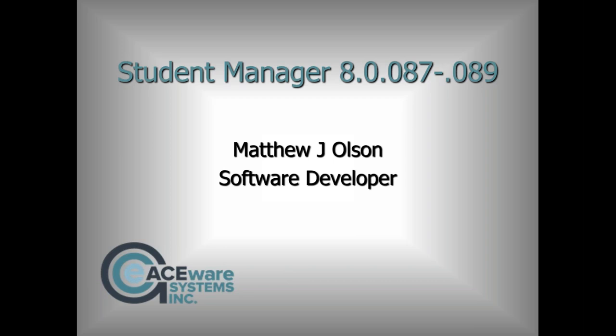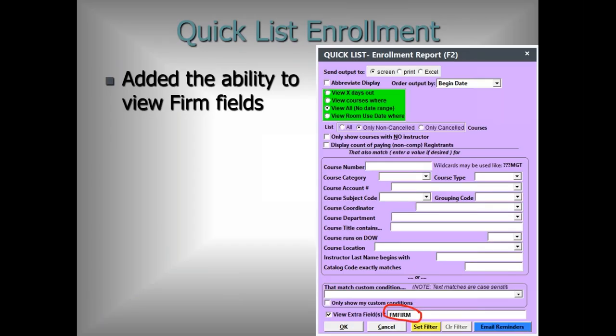Some things will be double-covered since Stein mentioned them, but I'll cover what Student Manager is doing as well. First: on the quick list enrollment — that's with your F2 key for those who use function keys — you can now put in any firm field at the bottom. Just put in 'fm' and whatever field name, and it will recognize that it should show those firm fields. If you've got a firm associated with the course, this will show that firm name associated with the course.